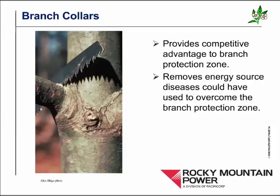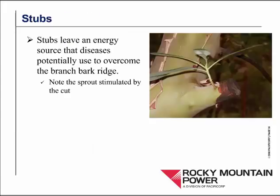So how do we apply some of this knowledge to pruning? One is that we need to be aware of branch collars. If we remove a branch exactly at the branch collar, we will only expose the core of the branch and its branch protection zone. We don't want to leave a stub because we don't want to leave an energy source for diseases to use to potentially overcome the barrier zone and enter the tree. So if you remove the branch precisely at the collar of the tree and only expose the core of the branch and the branch protection zone, you give a pronounced advantage to the tree in its struggle with diseases for its structural integrity.